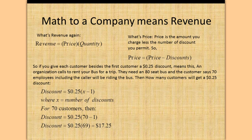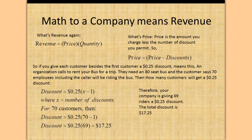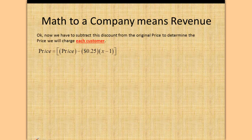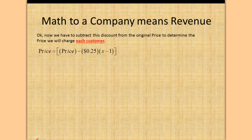What's price? Price is the amount you charge less the number of discounts you permit. So price equals price minus discount. Your company is giving 69 riders a $0.25 discount; the total discount is $17.25. We subtract this discount from the original price to determine the price we will charge each customer. So price equals price minus discount, and our equation for discount is $0.25 times (X minus 1).